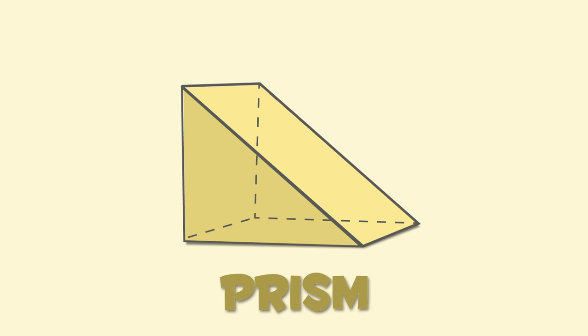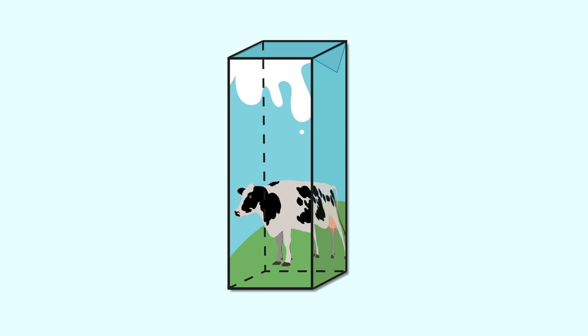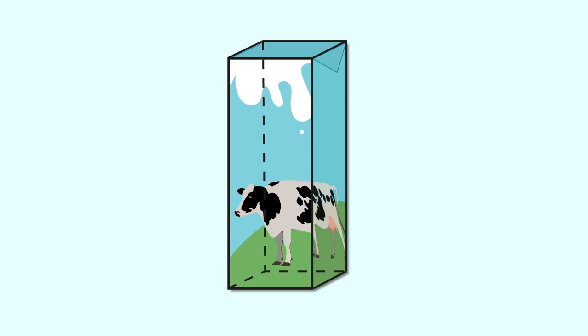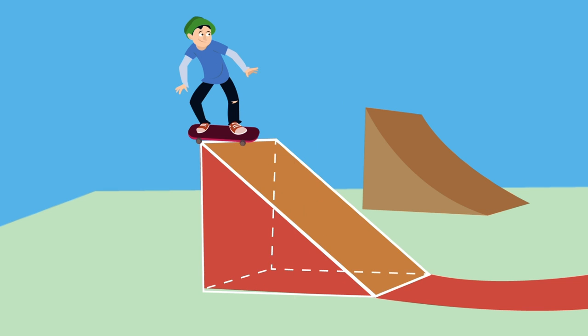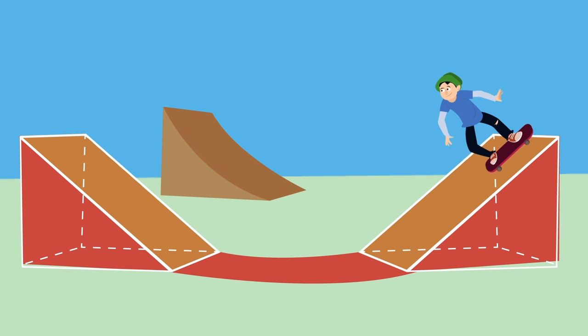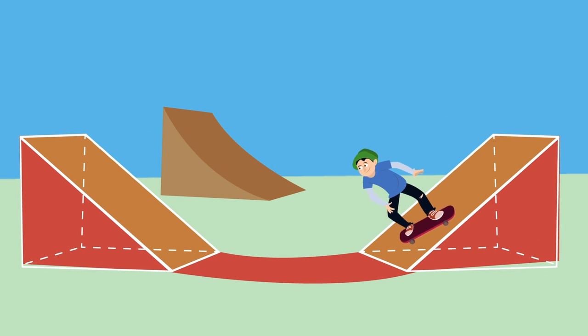This is a prism — both faces of the prism are identical. There are many types of prisms: this milk carton is a prism whose faces are identical squares, but in this prism its bases are triangles. It looks like a skating ramp — wow, so fast!